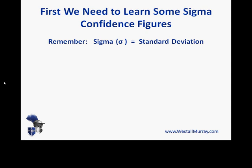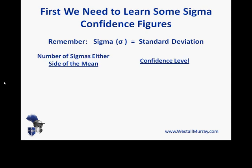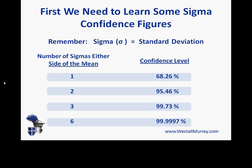Remember that sigma is standard deviation, denoted by the Greek letter lowercase sigma. For various numbers of sigmas either side of the mean, we have certain confidence levels. To hit a target one sigma either side of the mean, we have only a 68.26% confidence. A larger target of two sigmas either side gives 95.46% confidence. Three sigmas either side gives 99.73% confidence. And six sigmas either side gives 99.9997% confidence — almost certain. You need to memorize these for the exam.